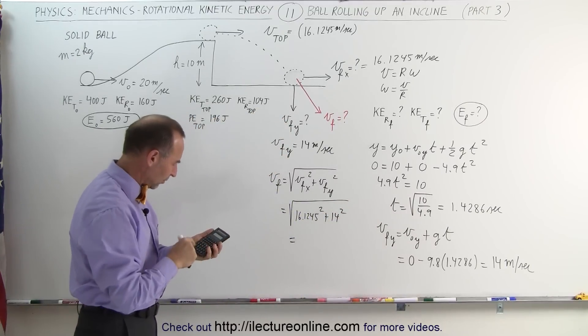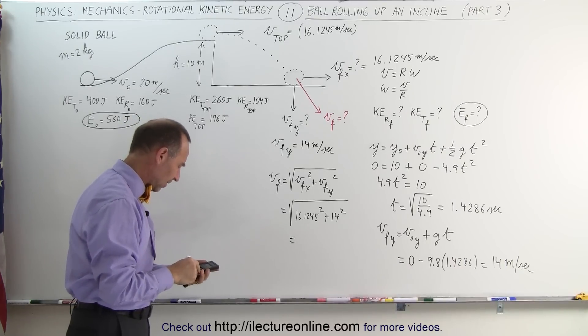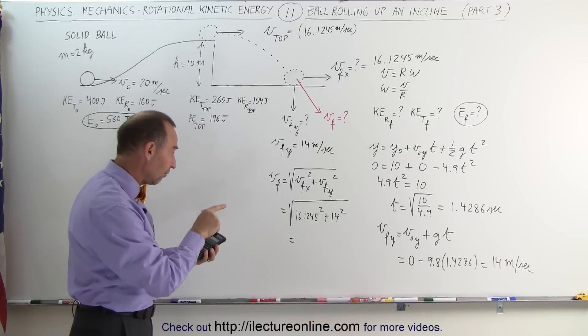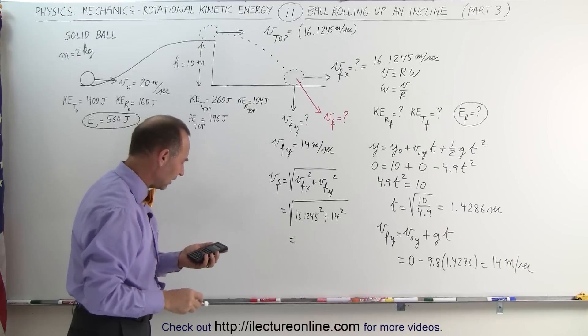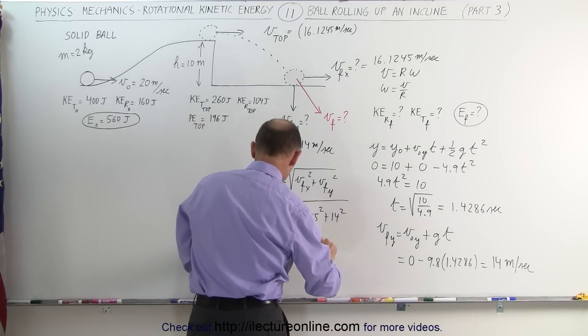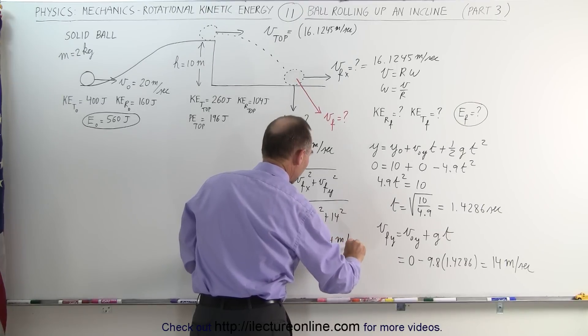All right, what do we get for that? So we get 16.1245 squared—that's exactly 260—so 260 plus 14 squared, that's 196. And we take the square root of that, we end up with 21.354 meters per second. That's now the final velocity.